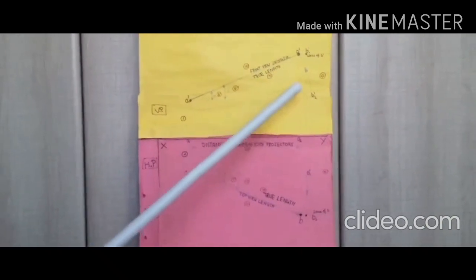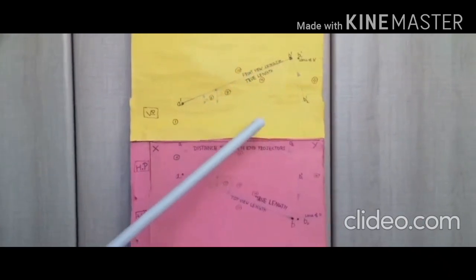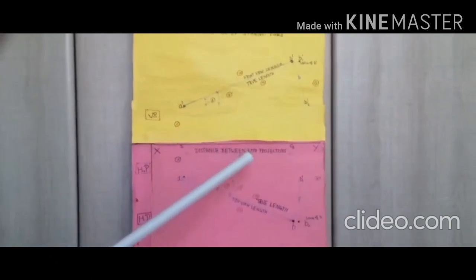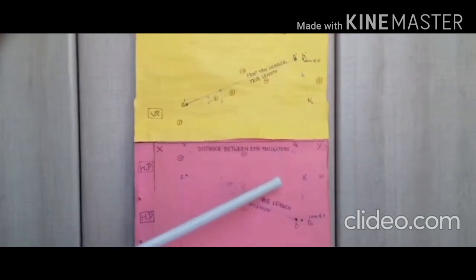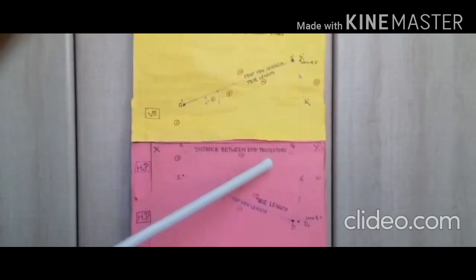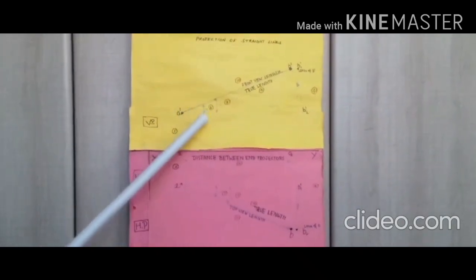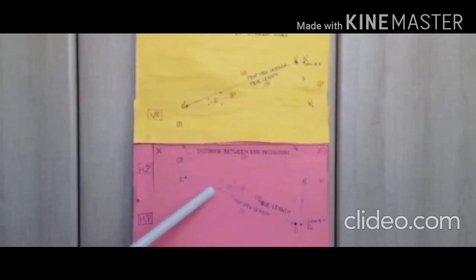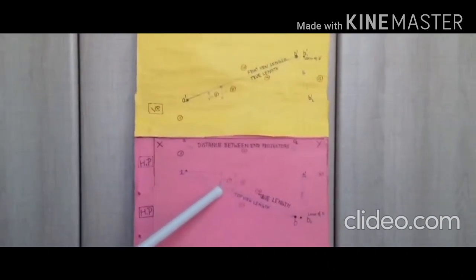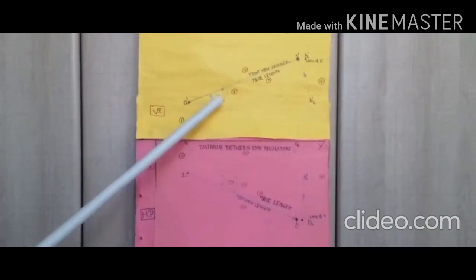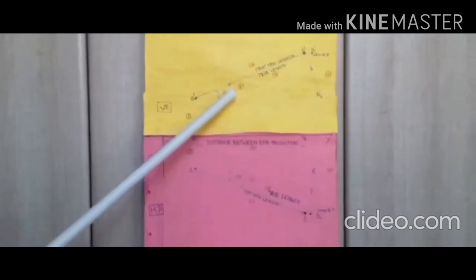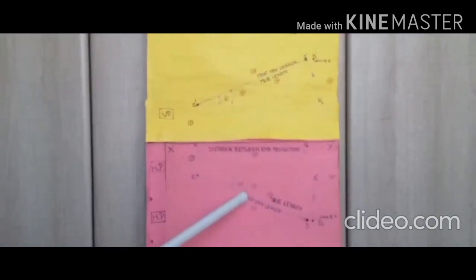Five: top view of the second endpoint, OB. Six: true inclination of the line with HB represented by angle theta. Seven: true inclination of the line with VB represented by angle beta. Eight: angle of the line with HB, alpha. Nine: angle of the line with VB, beta.